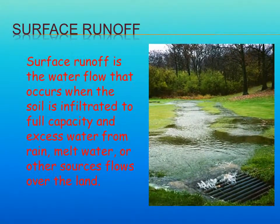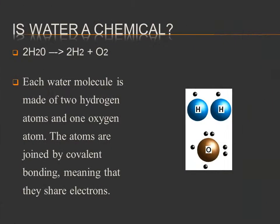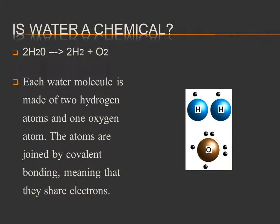Next, Surface Runoff: surface runoff is the water flow that occurs when the soil reaches full capacity and excess water from rain or other sources flows over the land. The chemical formula for water is 2H₂O → 2H₂ + O₂. Each water molecule consists of two hydrogen atoms and one oxygen atom, joined by covalent bonding, meaning that they share electrons.